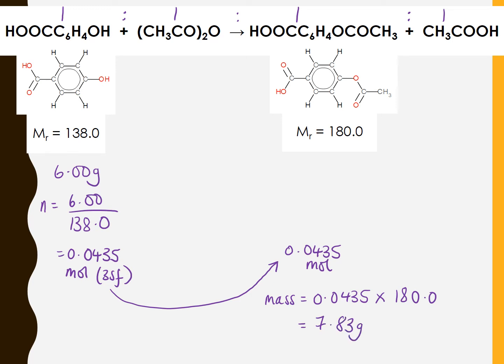So we know that if we take 6.00 grams of salicylic acid and react it and manage to retrieve all of that product, then we should end up with 7.83 grams of product. That would be the maximum, representing 100% yield.